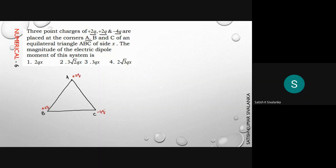Let us split this -4q as -2q and -2q. So -2q and +2q form one dipole moment which is equal to 2q into x, where x is the side of the equilateral triangle.